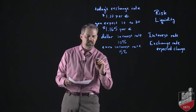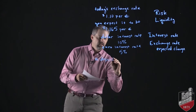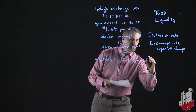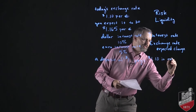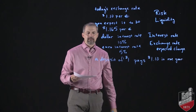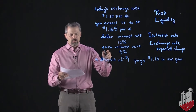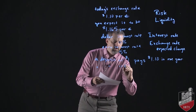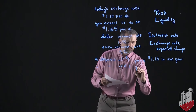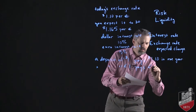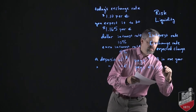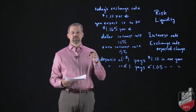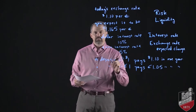A deposit of one dollar pays $1.10 in one year at the 10% dollar interest rate. A deposit of one euro pays 1.05 euros in one year at the 5% euro interest rate. Our question is: which offers the highest real rate of return? Step one is to find the current dollar price of a one-euro deposit — using the current exchange rate of $1.10 per euro, the dollar price of that deposit is $1.10.